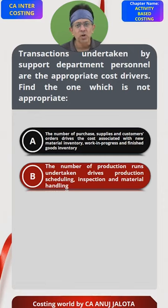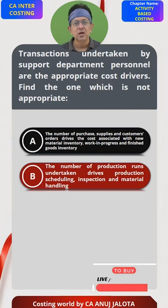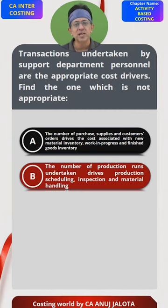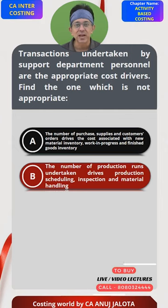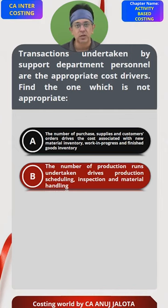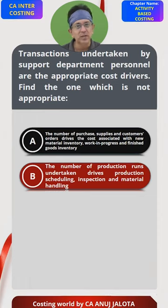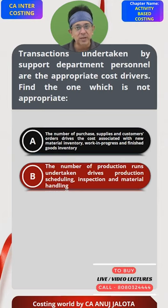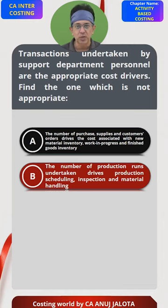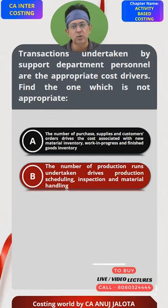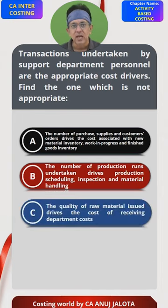Option B: the number of production runs undertaken drives production scheduling, inspection, and material handling. More or less this should also be true, because a production run means producing say 100 units — you set up and run the machines once, that is called one production run. So whenever you do one production run, you will schedule that run, inspect the goods produced in that batch, and handle the required material. So how many production runs happen, that many times scheduling, inspection, and material handling will also happen. This makes sense.